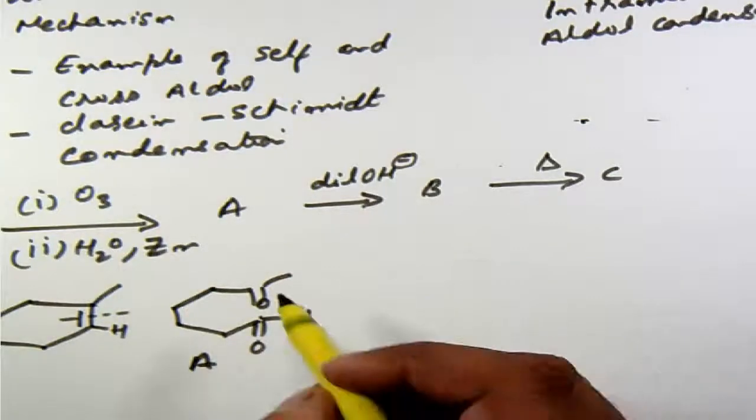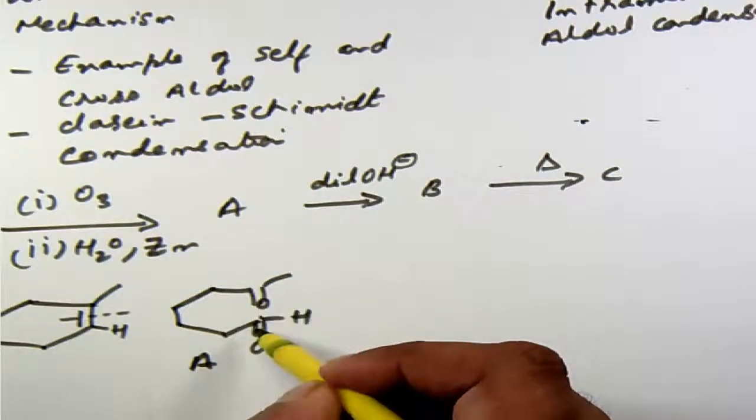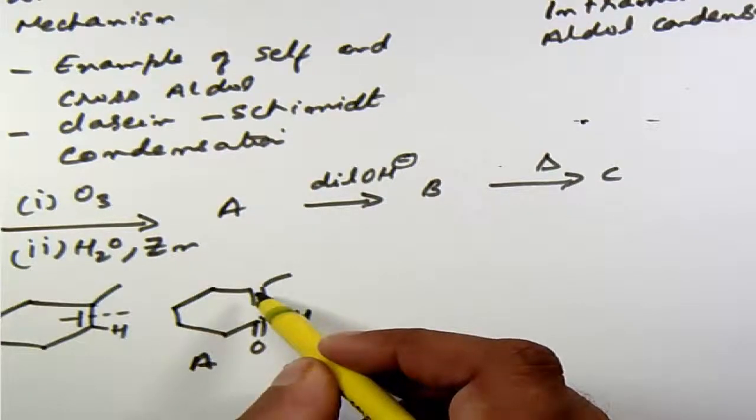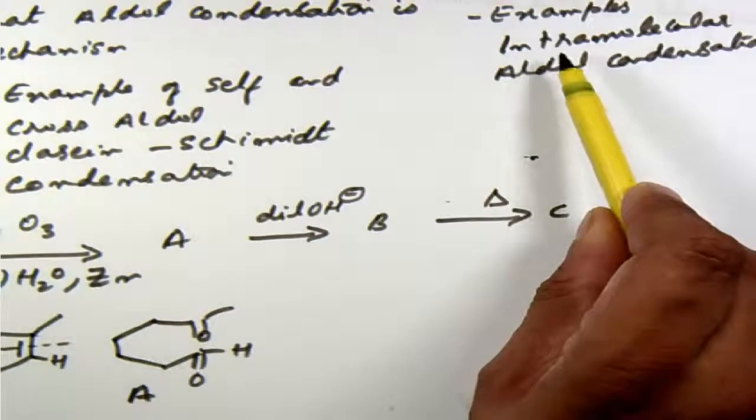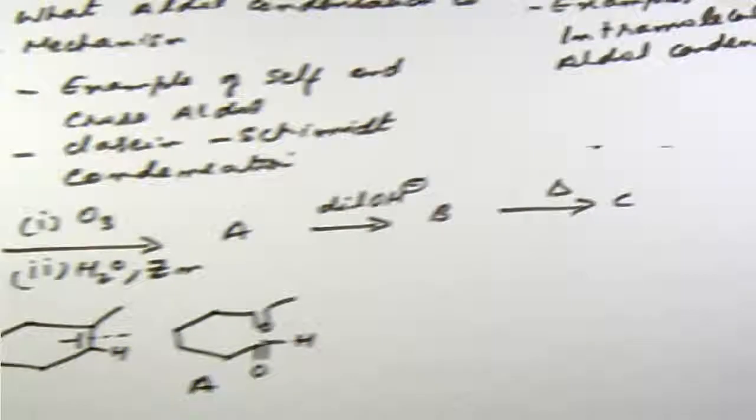Now when I want to go from A to B, now see I've got two carbonyl compounds and both of them happen in the same molecule. So I'm going to get what was mentioned earlier as the intramolecular aldol condensation.